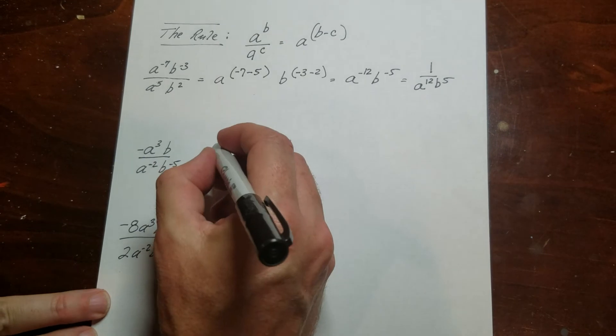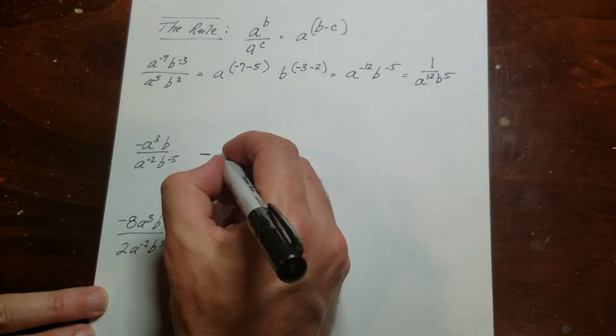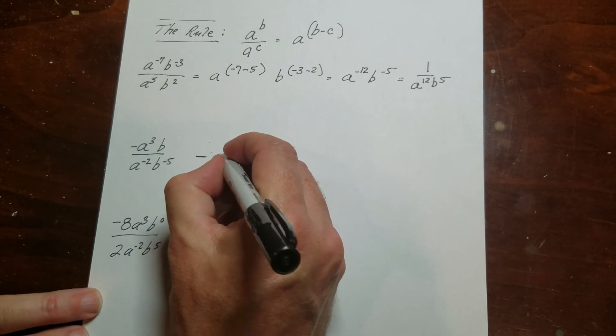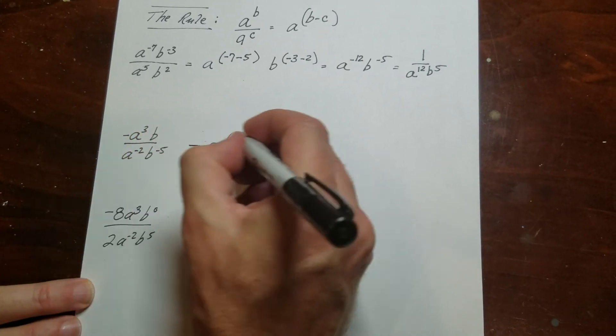So I'm going to do the same thing here. So first of all, I know my answer is going to be negative. So I want to make sure I put a big negative out there like that. And then I've got my a, and I've got a 3 up here, minus negative 2.